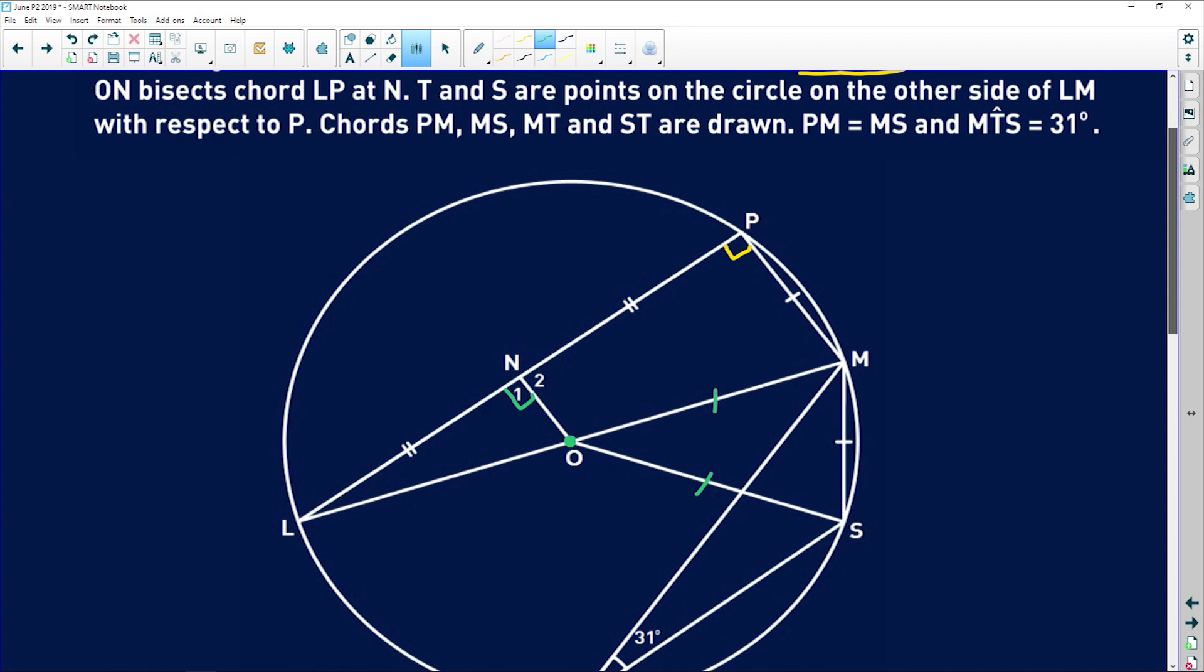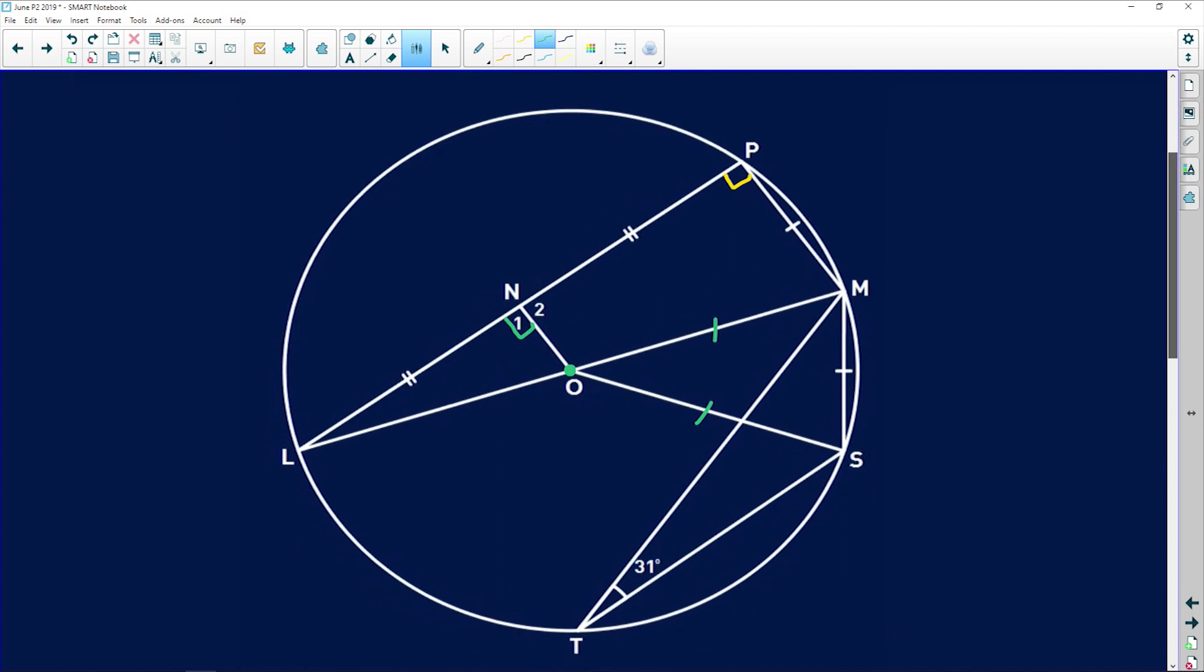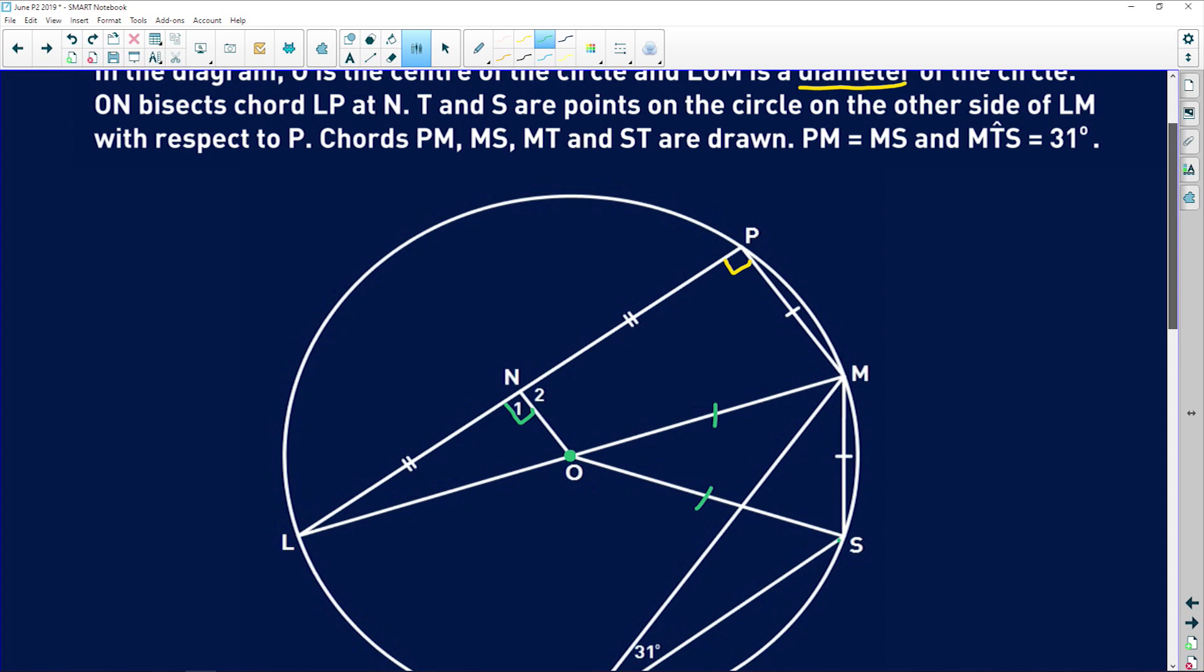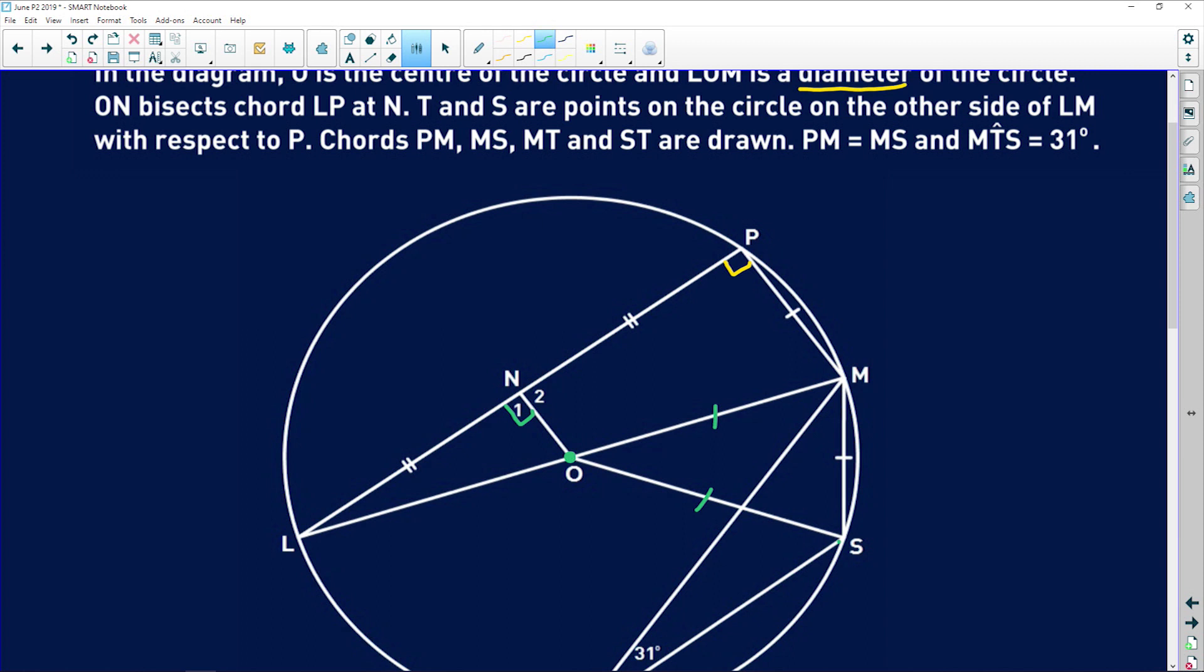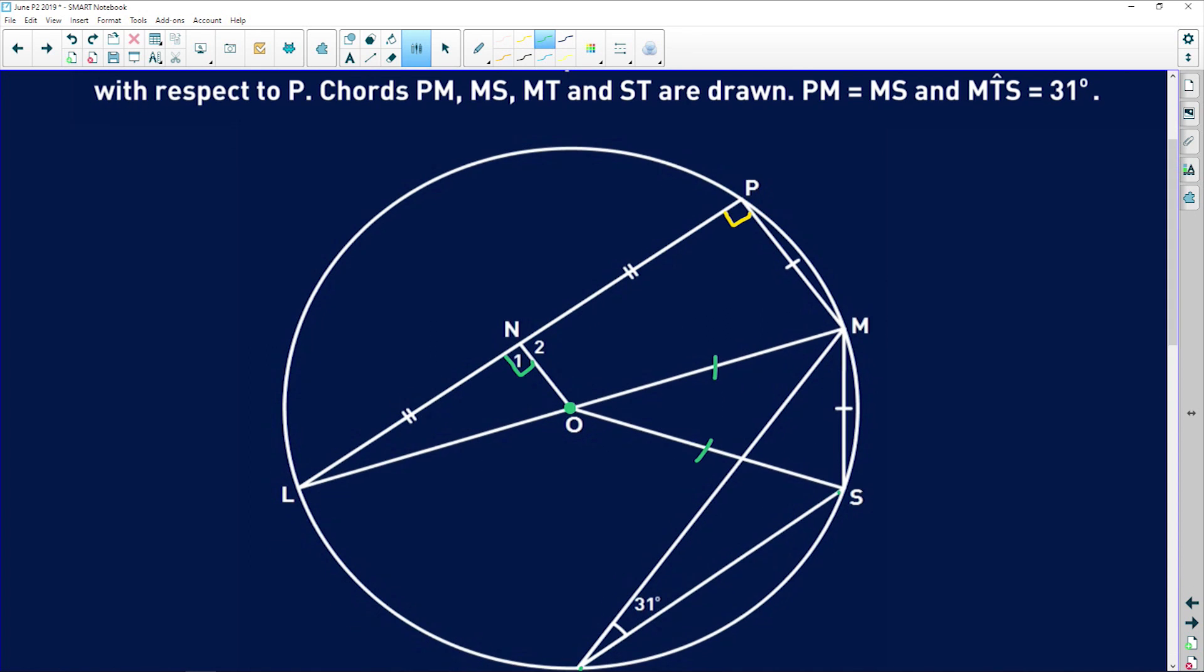T and S are points on the circle on the other side of LM with respect to P. So that's just saying that these two points sit on the other side of M with respect to P. So P sits on this side of M and these two sit on that side of M. Not excessively important, but also important. Then it says chords PM, MS, MT and ST are drawn. They're basically just saying that all of those chords sit on the circumference of the circle.